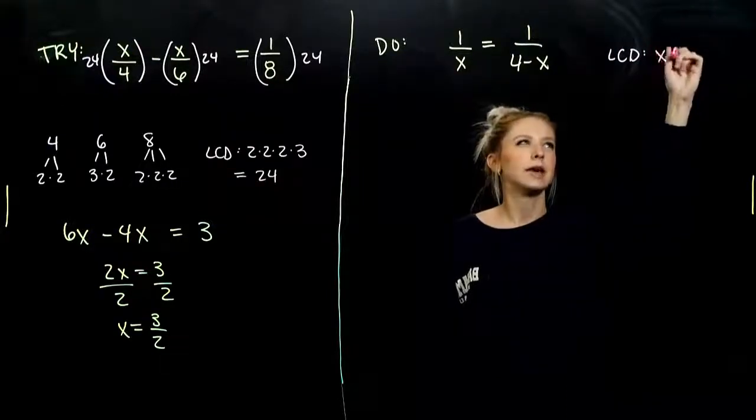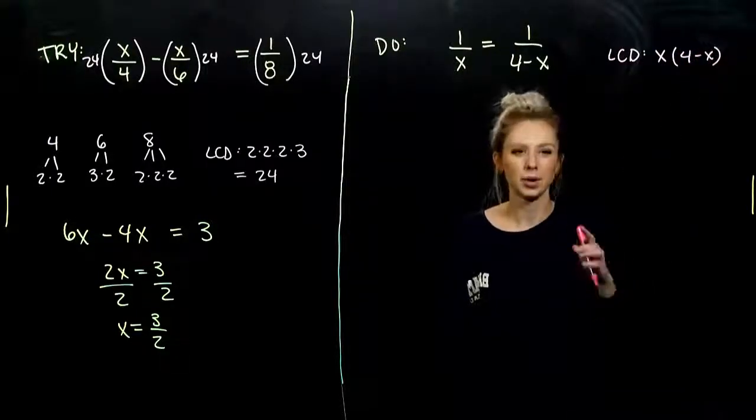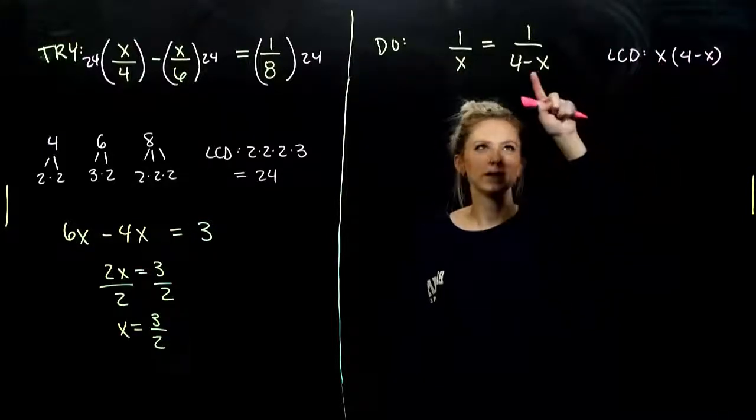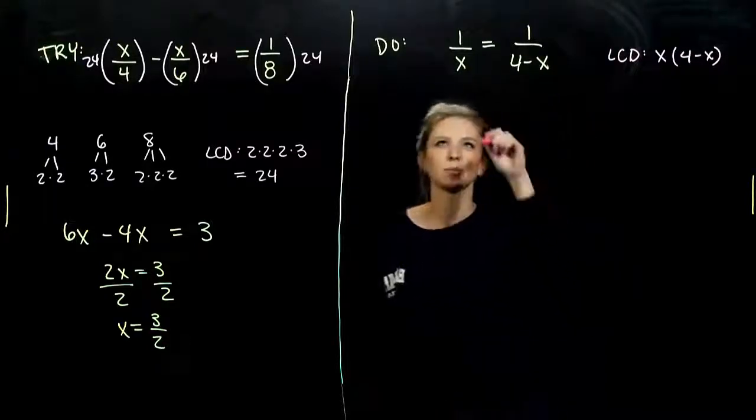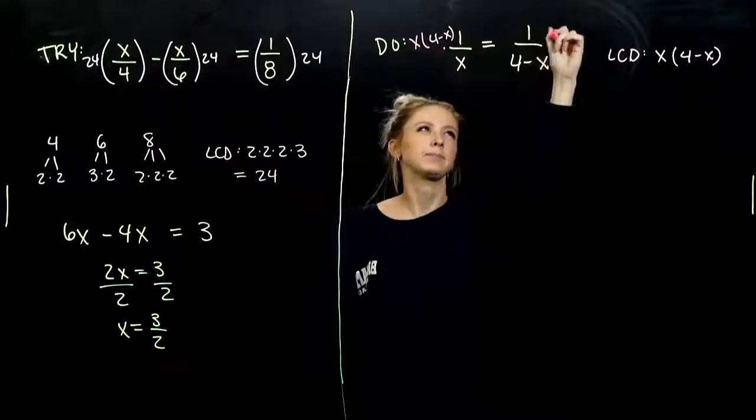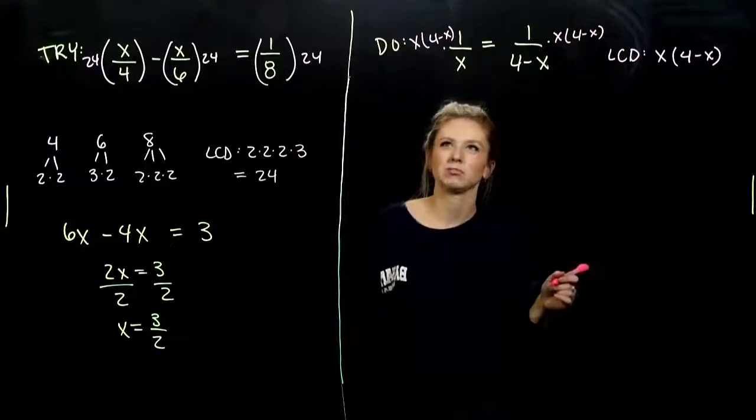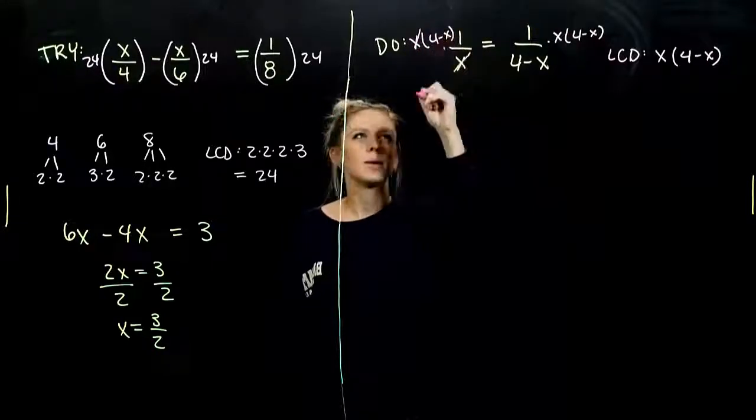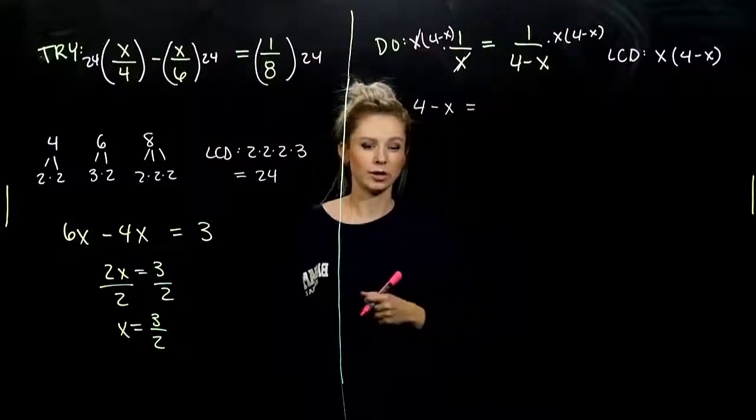And what is our LCD? x times, what else? 4 minus x. Because I know it has to be divisible by one of them. If I start there and ask, what is this one missing that the other one has? That entire factor that lives down below. So as we multiply by the LCD here, I've got x times 4 minus x. x times 4 minus x. What's really happening? So I've got x divided by x. That will go away. And up top, I'm just left with 4 minus x.